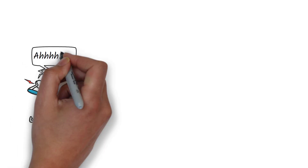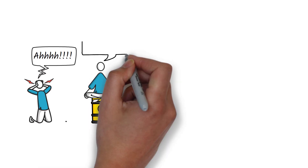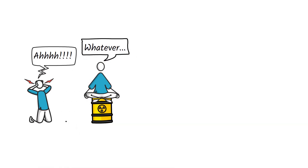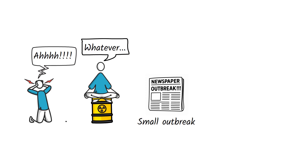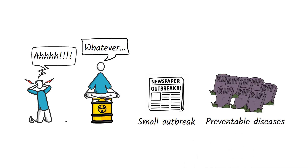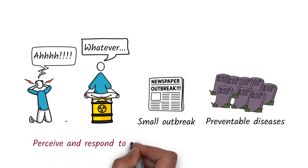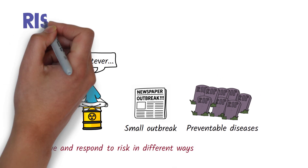Have you ever wondered why some people panic over small risks, while others ignore serious dangers? Why a small outbreak can cause widespread fear, yet thousands of deaths from preventable diseases go unnoticed? The reality is that people perceive and respond to risk in very different ways, and that can be shaped by how risk is communicated.